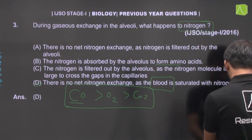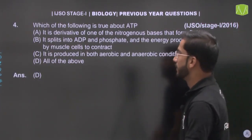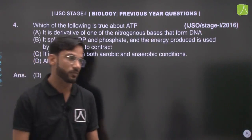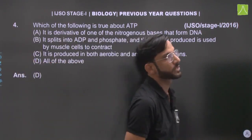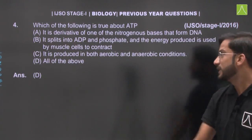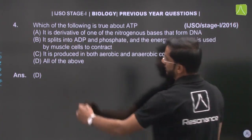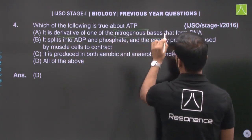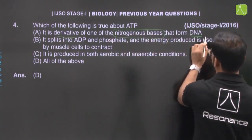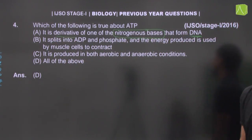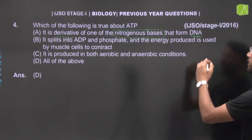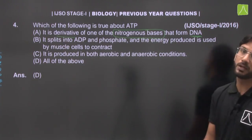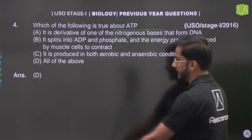Next question — which of the following is true about ATP (adenosine triphosphate)? Option A: it is a derivative of one of the nitrogenous bases that forms DNA. Adenosine itself is a nitrogenous base, so Option A is correct.